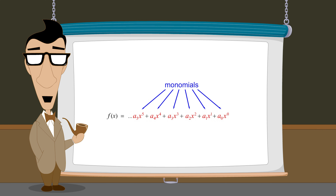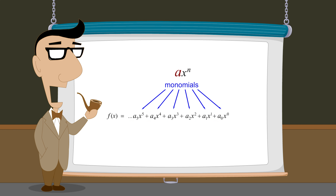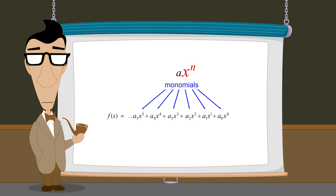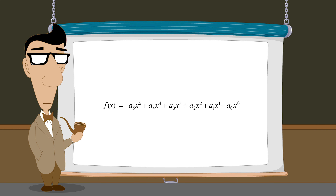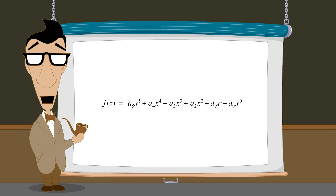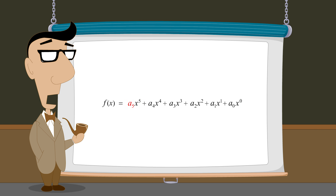Monomials with a single real variable have the form a times x to the nth power, where a is a positive or negative constant and x is a real variable with a non-negative integer exponent. The terms of polynomials written in standard form are arranged so that the exponents decrease going from left to right. Therefore, the term with the largest exponent is always the leading term, and the coefficient of the leading term is called the leading coefficient.